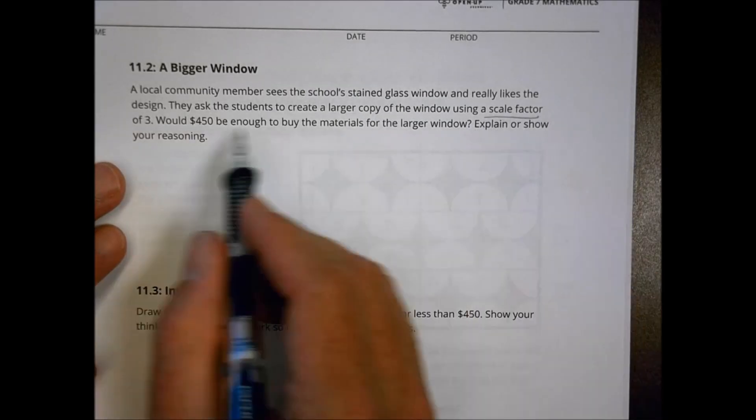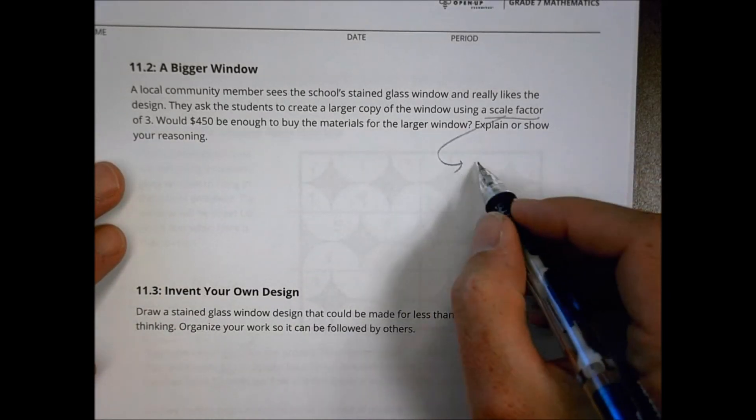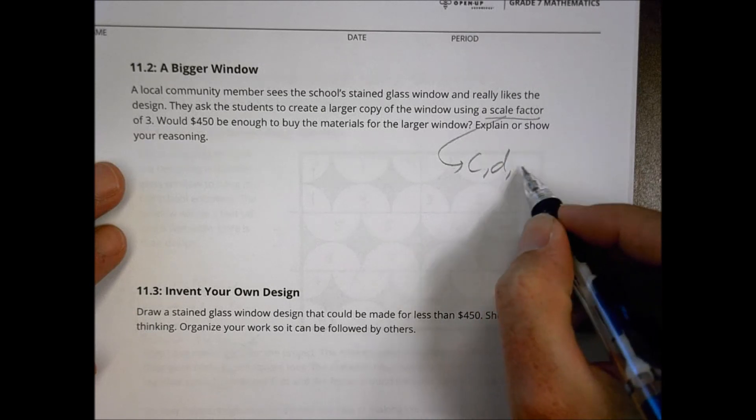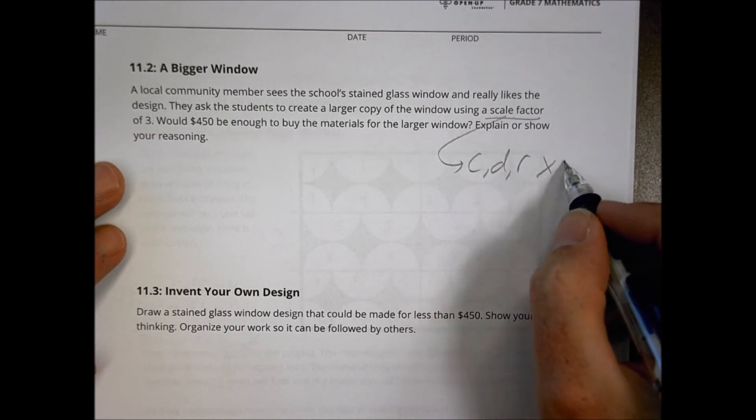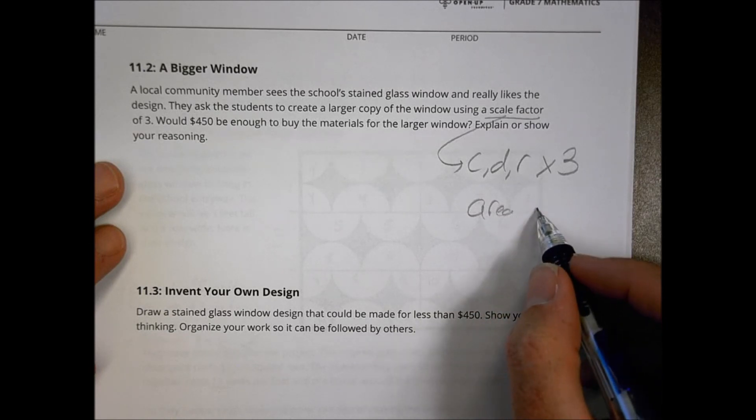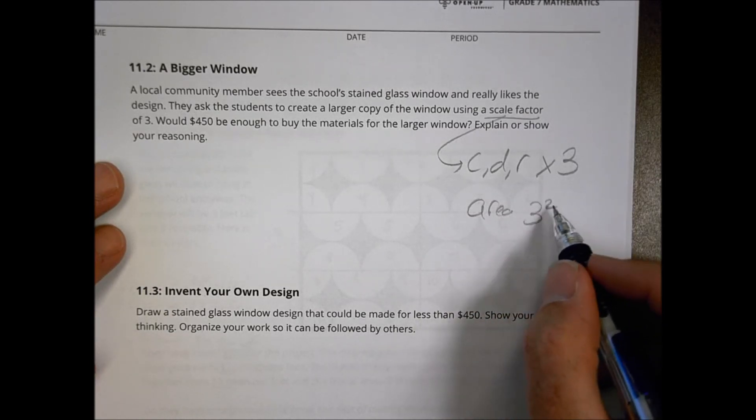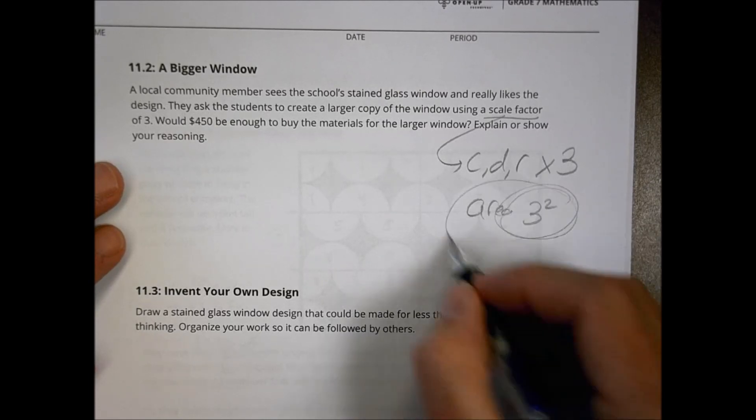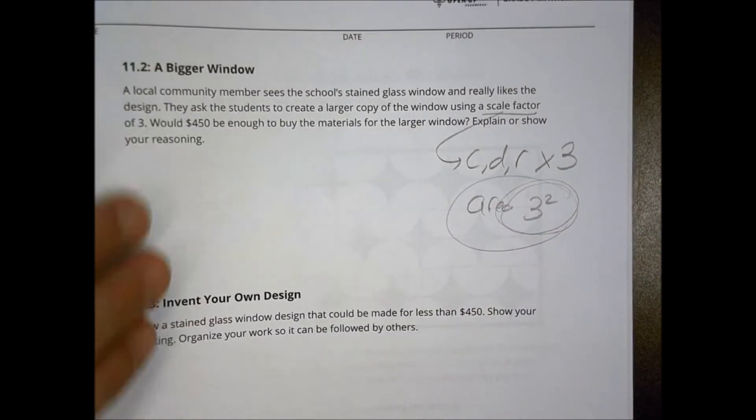Using a scale factor now of 3. Remember with scale factor, circumference, diameter, radius. If that's a scale factor of 3, we're going to multiply by 3. But area is not times 3. It's going to be 3 squared type of thing, right? So we've got to think about what's going to happen to area. Anyways, move on from that. I'll let you do that on your own. Good job. And we'll see you next time.